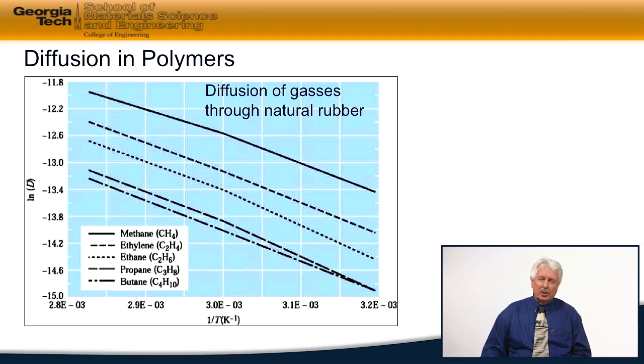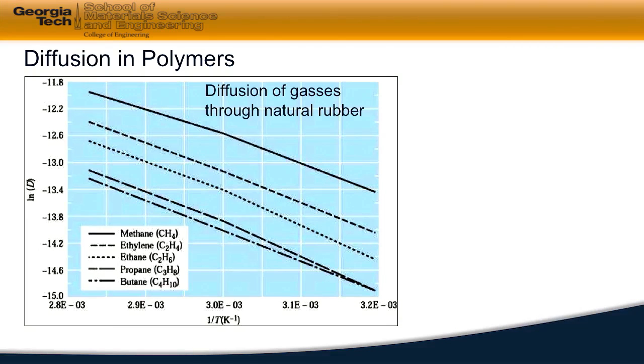So this size effect is very similar to what we talked about when we were describing the interstitial diffusion of carbon through the two different forms of iron or the diffusion of hydrogen as it moved through the two different forms of the structure of iron.